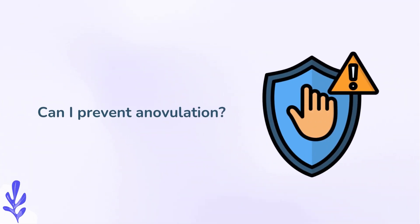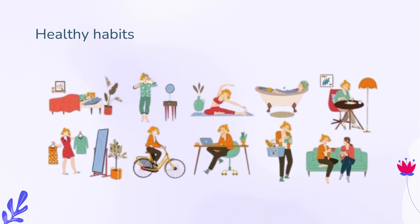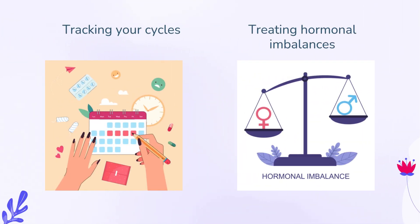Can I prevent anovulation? You can't prevent anovulation, but some of the reasons you have anovulatory cycles can be managed. Things you can help manage include healthy habits — getting enough sleep, eating nutritious foods, exercising moderately, and managing stress levels can all help regulate hormones and contribute to overall hormonal health. Tracking your cycles by keeping records of cycle length and symptoms can help you identify irregularities. Treating conditions like PCOS or thyroid dysfunction with medication or other treatments can also increase your chances of ovulation.